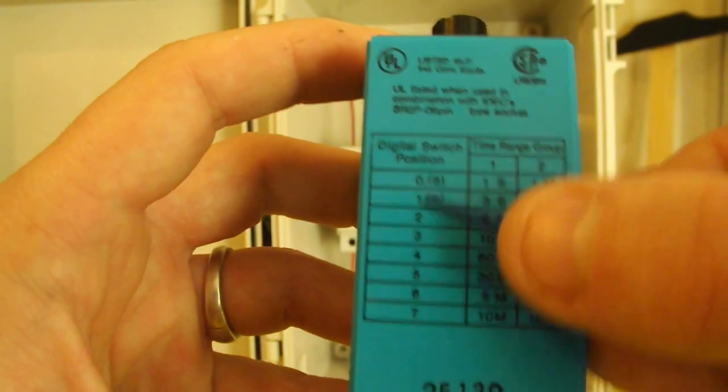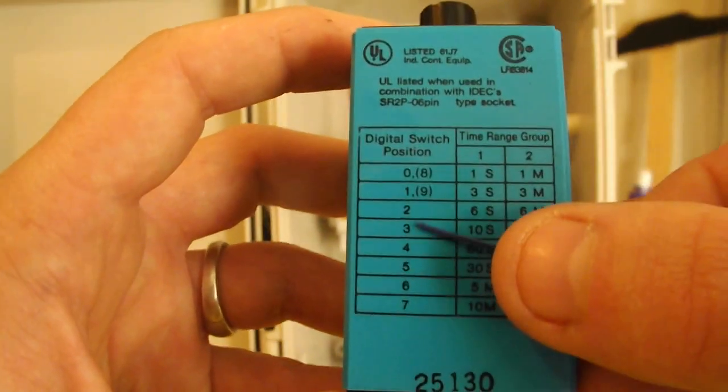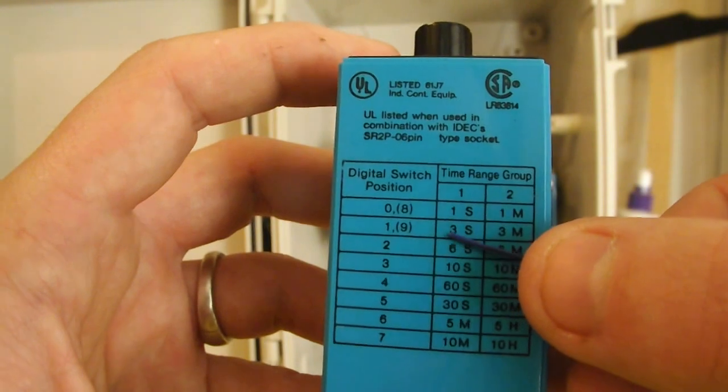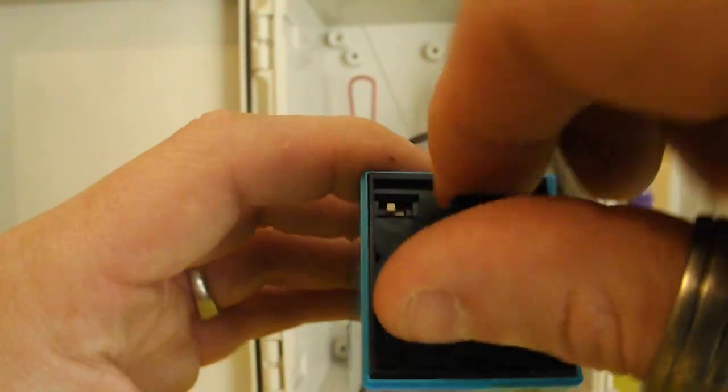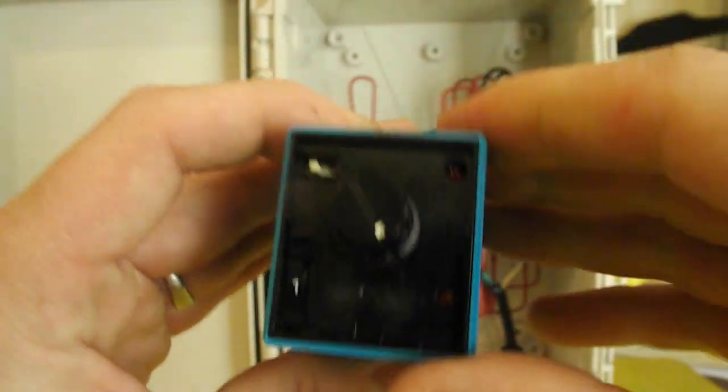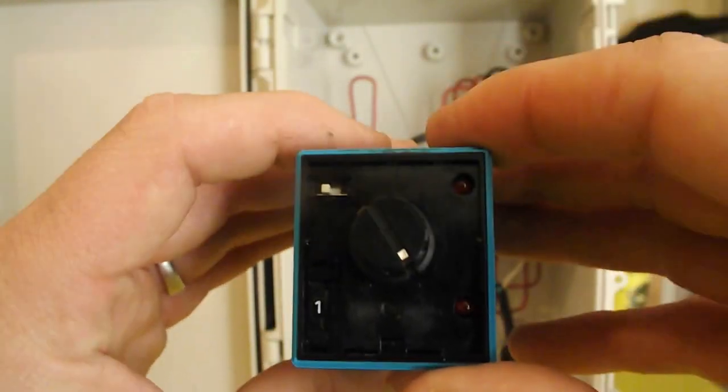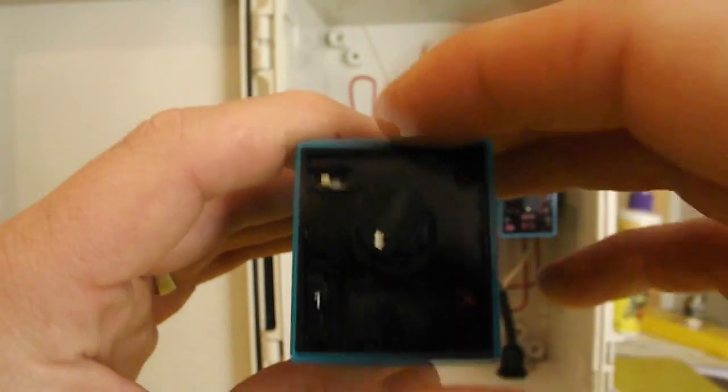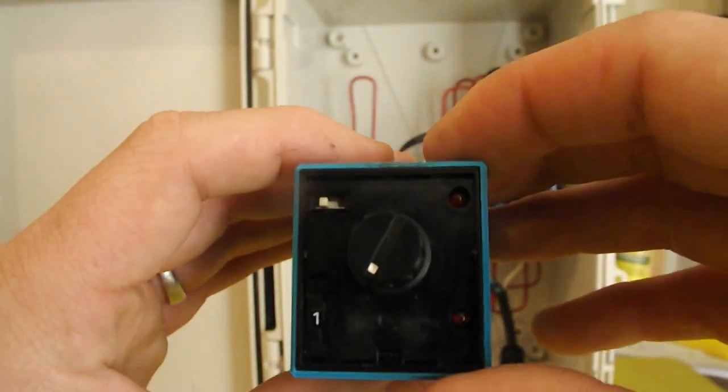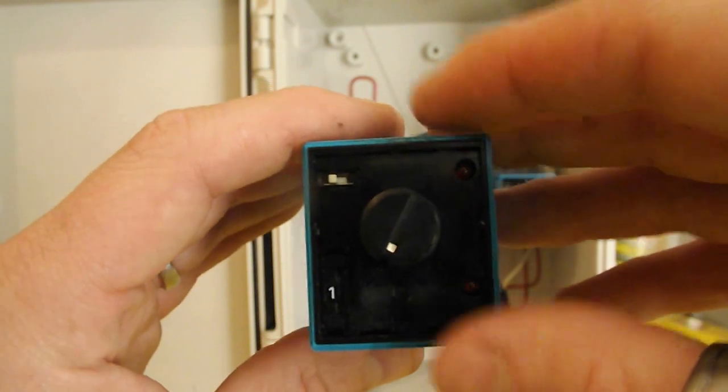Those numbers correspond to the digital switch position. So mine is at number one, giving me a total of three seconds. If I had this knob turned all the way up here, it would give me three seconds of on time. Turned all the way down, it would get to almost zero, probably something like a quarter of a second.